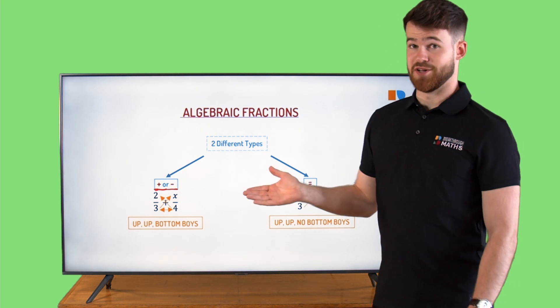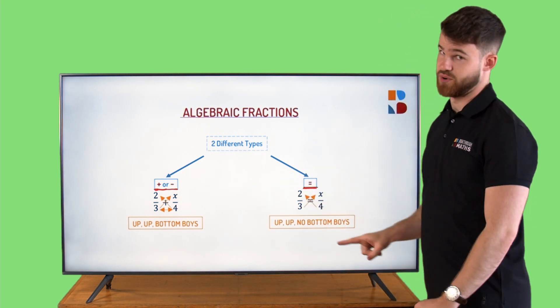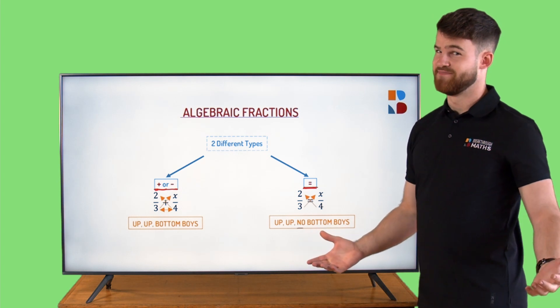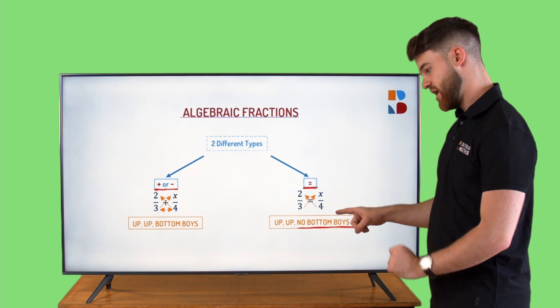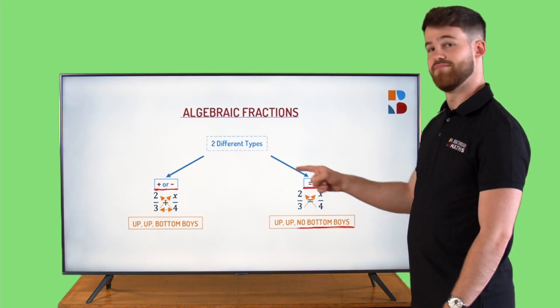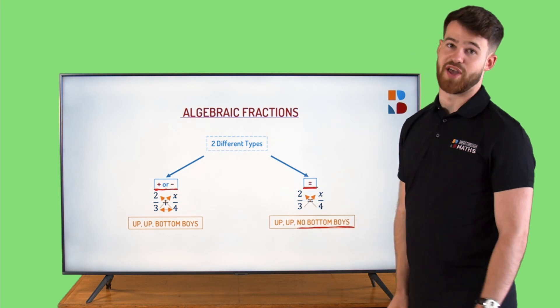If there's an equals in the middle it's very similar except we have no bottom boys. What do I mean by that? We don't multiply the bottom numbers together. It's just a crisscross of 4 multiplied by 2, 3 multiplied by x.